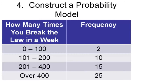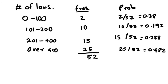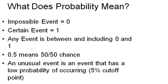What does probability mean? An impossible event equals 0, a certain event equals 1, and any event is between and including 0 and 1. A value of 0.5 means a 50-50 chance. An unusual event is an event that has a low probability of occurring, with a 5% cutoff point.